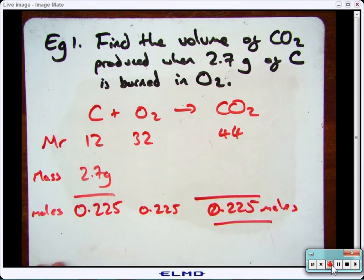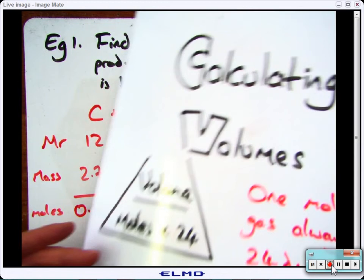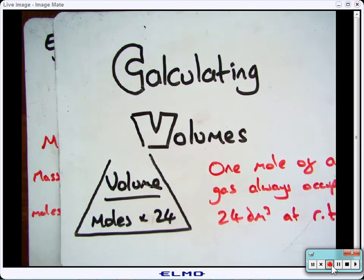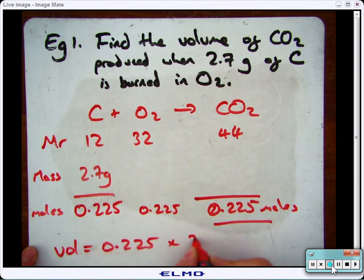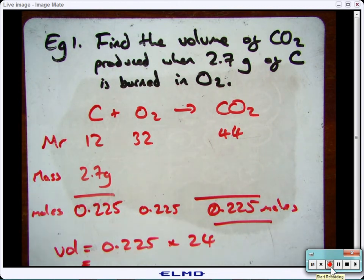So I've now got my moles of carbon dioxide, and I want to work out my volume. So if we go back to this equation here, where volume is moles times 24, so 0.225 times by 24, which comes out to 5.4 decimeters cubed.